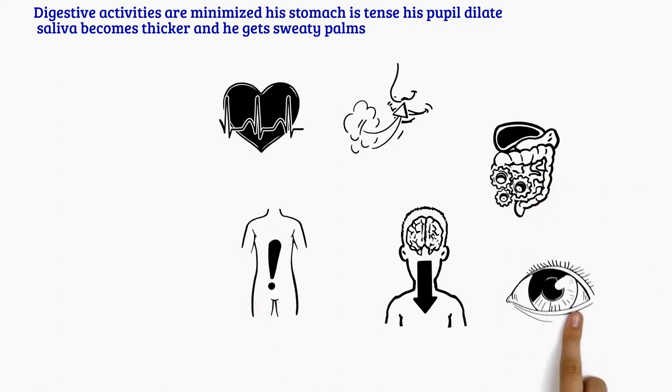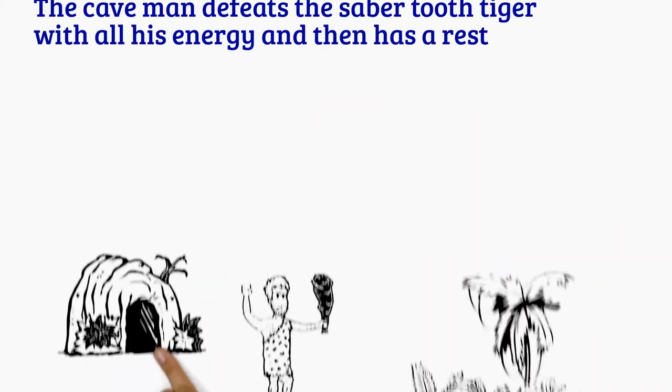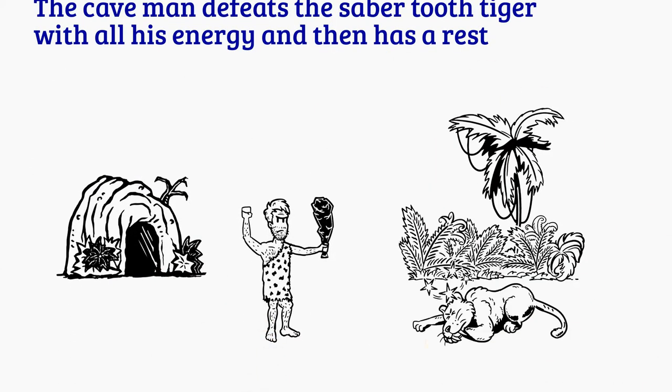Saliva becomes thicker and he gets sweaty palms. The caveman defeats the saber-toothed tiger with all his energy and then has a rest.